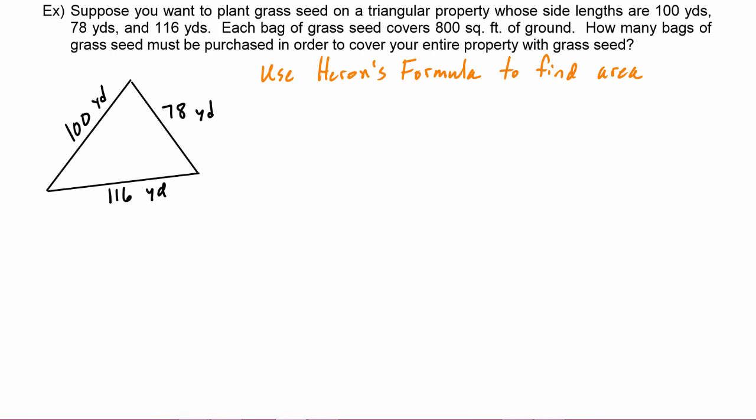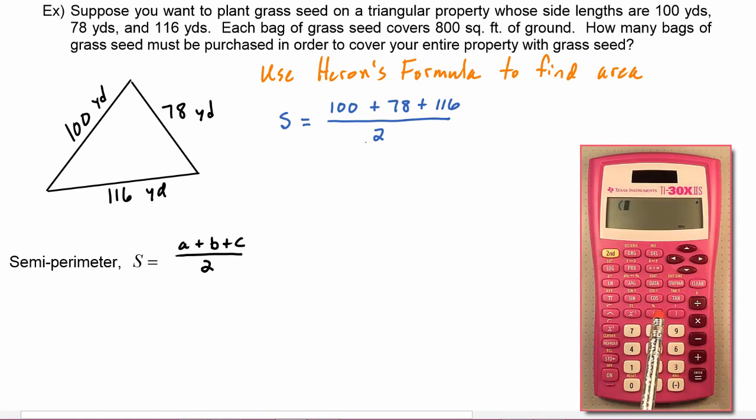So we know that Heron's formula uses that special number S, the semi-perimeter. S means we have to add up the three sides, so we're going to do 100 plus 78 plus 116 and divide that by two. We find out that that is 147.